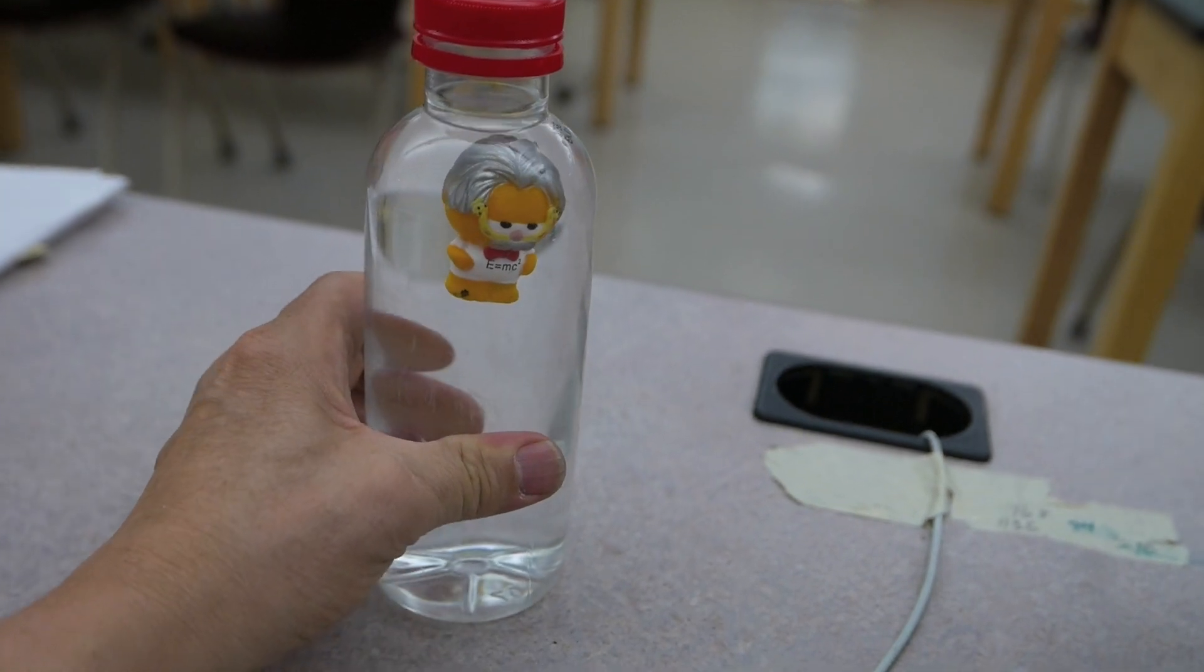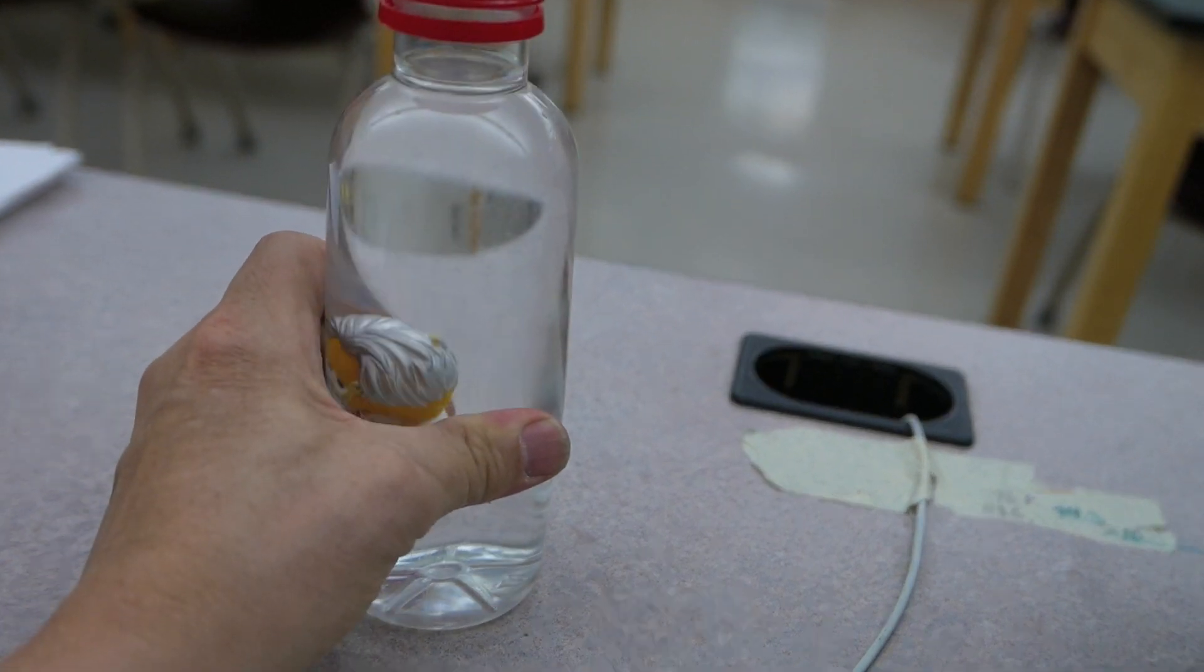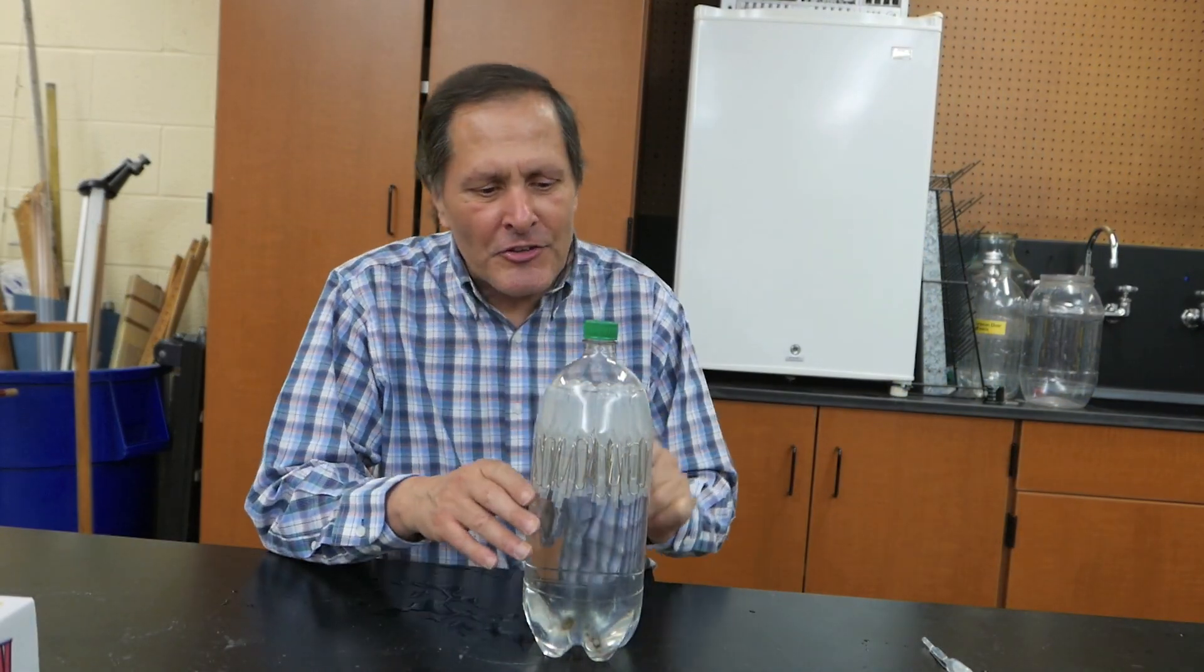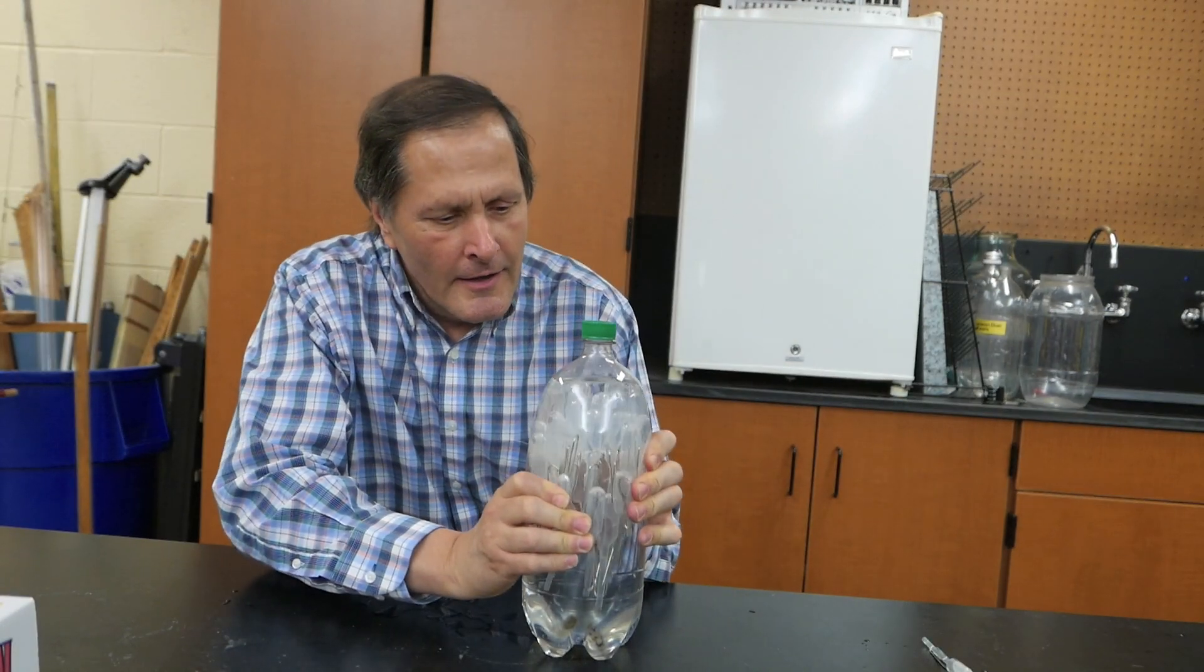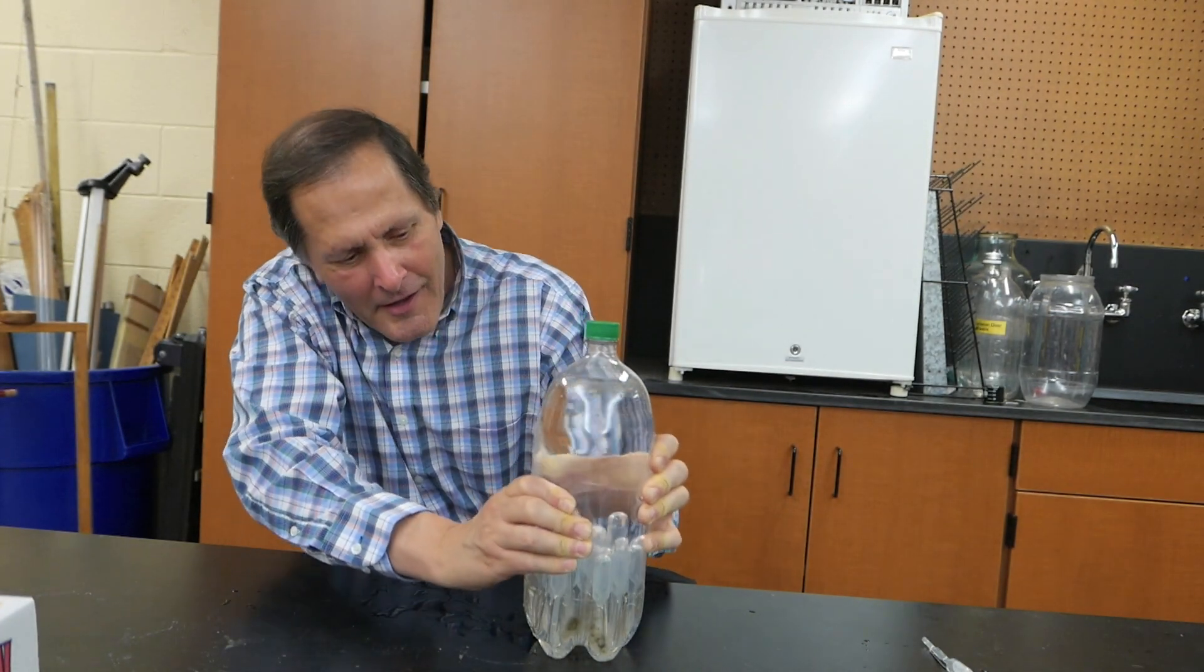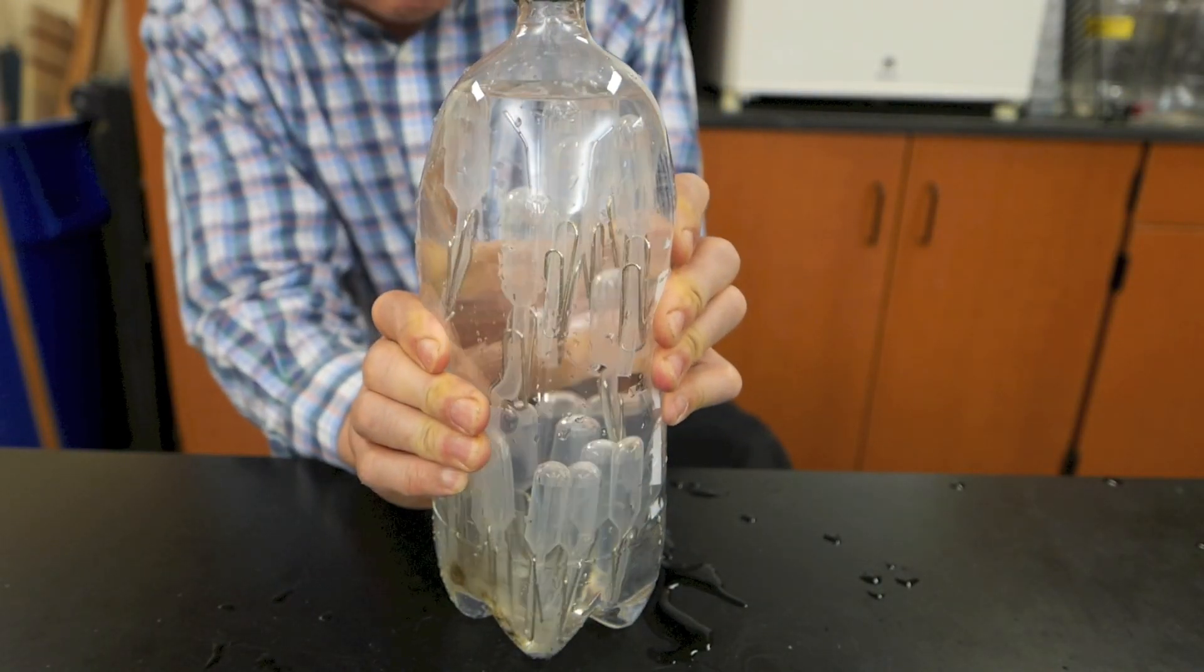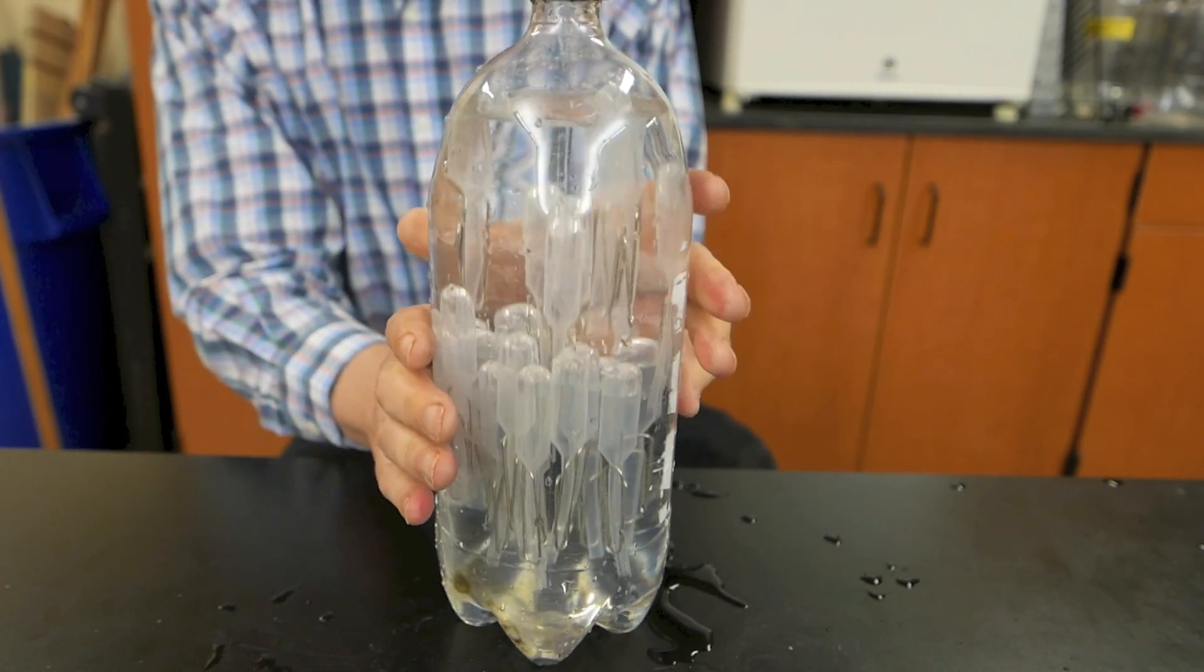If you look around, you can find all sorts of bottles that work. Now what's the most number of Cartesian divers we can get into a 2 liter soda bottle? Right here I have 33. And they all dive. And they all come back up again. I wonder if it's the world's record for the number of divers that you can have in a soda bottle. I'm going to try it again making divers out of soda straws and see if we can get at least 100.